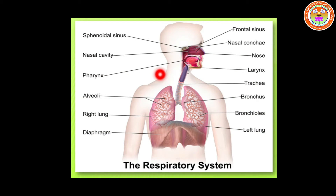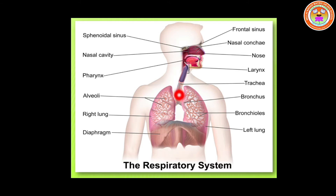The human respiratory system is involved in the exchange of respiratory gases and thereby it helps us to breathe. The human respiratory system consists of nostrils, nasal cavity, pharynx, larynx, trachea (commonly called the windpipe), bronchi (the branches), and lungs. It helps in the movement of air in and out of the body.